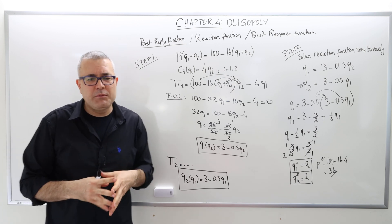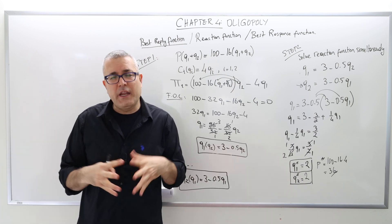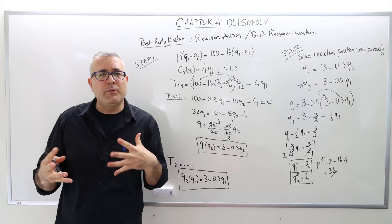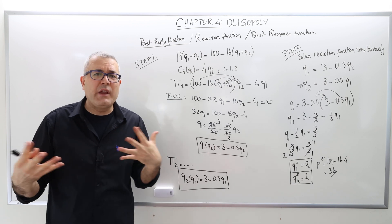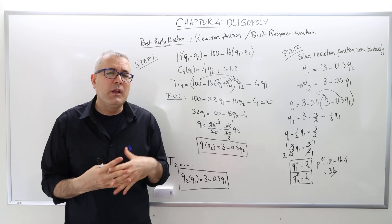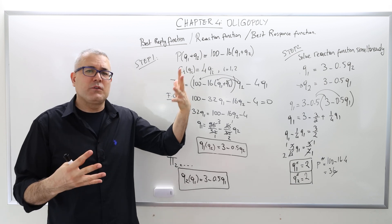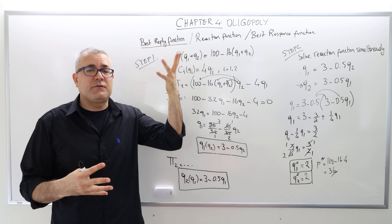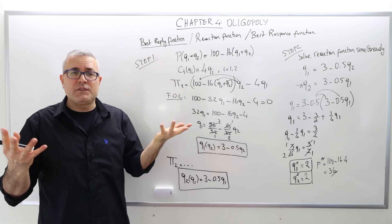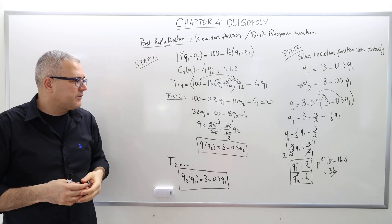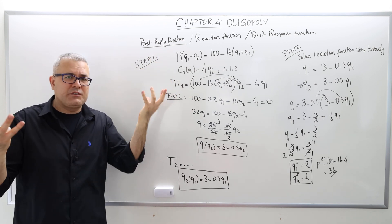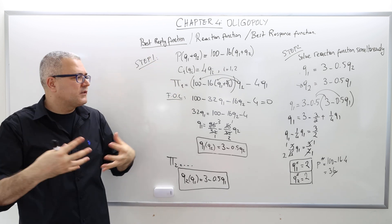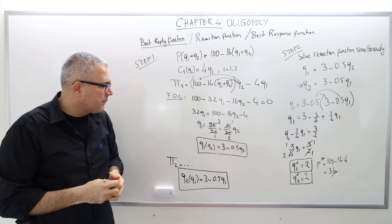Sometimes people call it the Cournot-Nash equilibrium, because Cournot was the one who thought about this solution concept — the best response — and then solving them simultaneously.